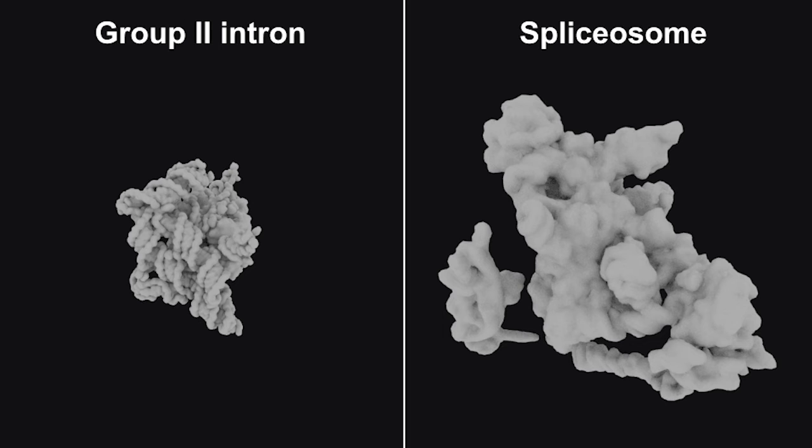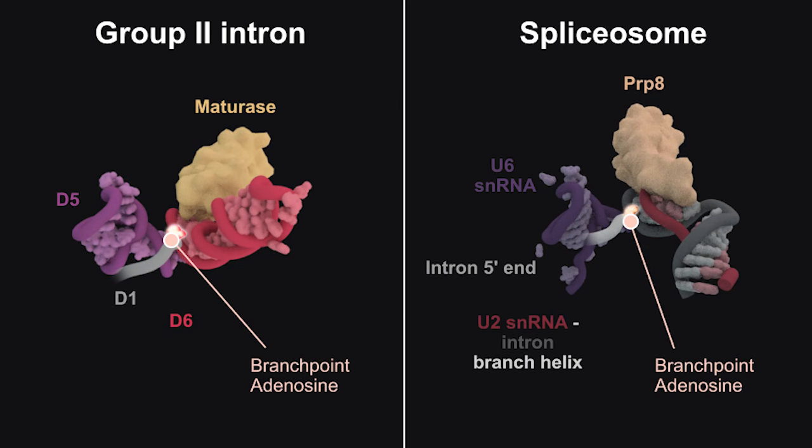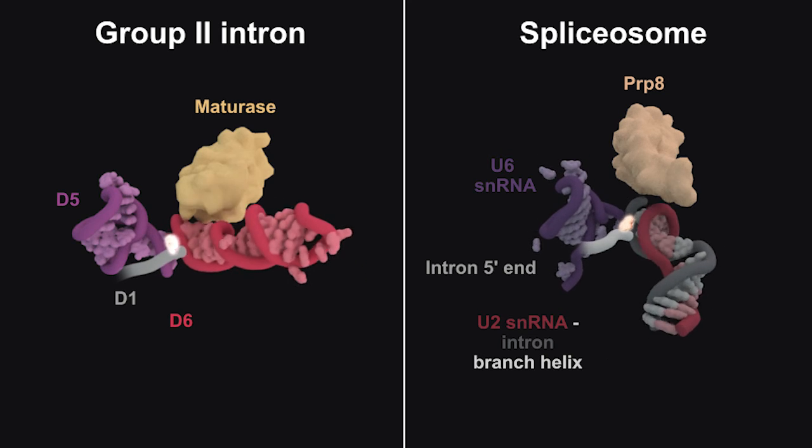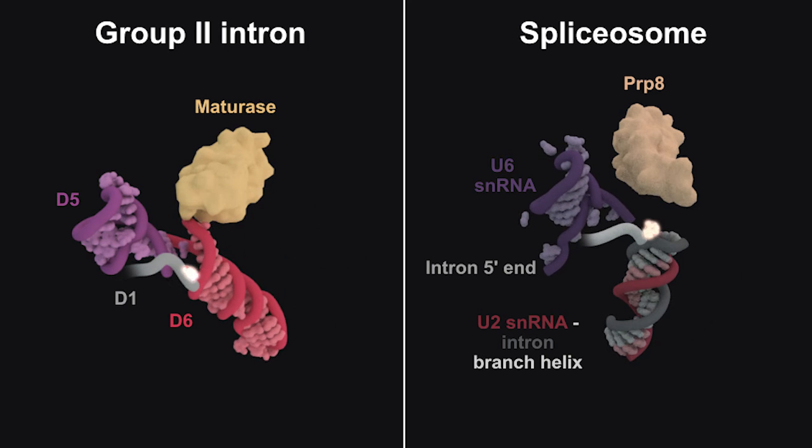The group II intron RNP structures provide new insights into the molecular evolution of splicing machineries. Comparison with the eukaryotic spliceosome reveals highly conserved motions of the branch helix underlying the transition between the intron branching and exon ligation steps.